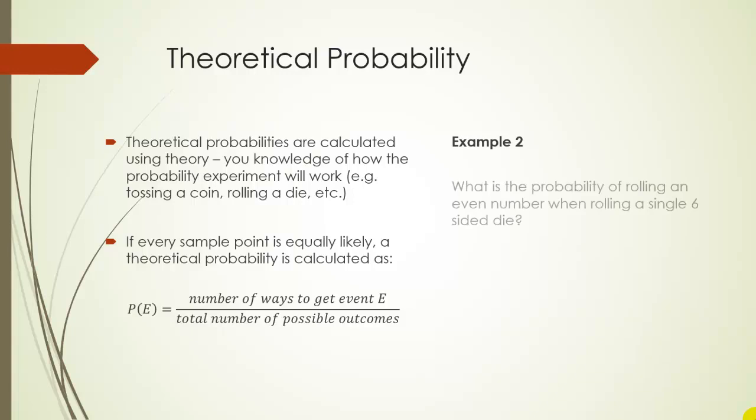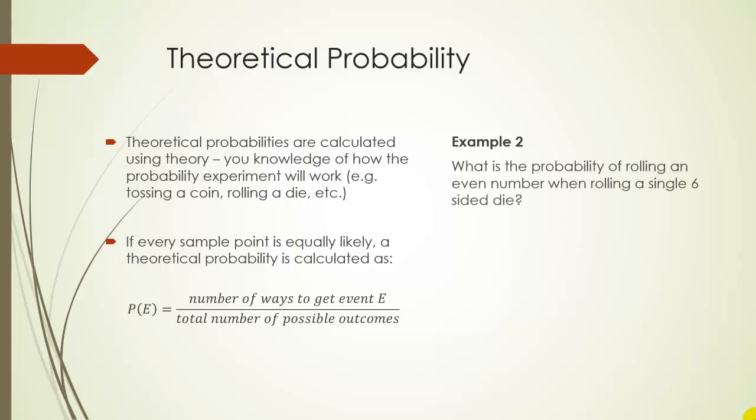For example, what is the probability of rolling an even number when rolling a six-sided die? Well, there are three ways to get an even number and there are six total possibilities, so our probability should be three out of six, or one over two, one half.